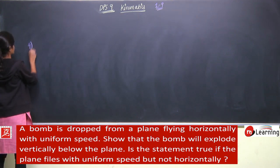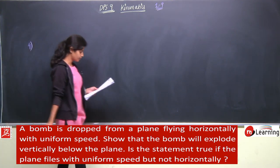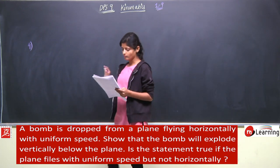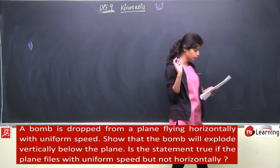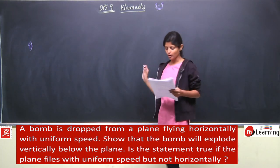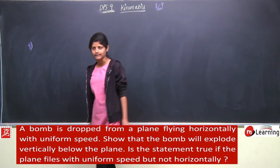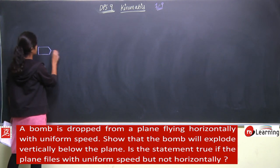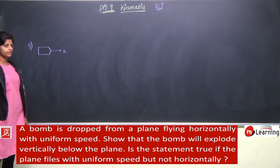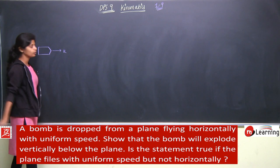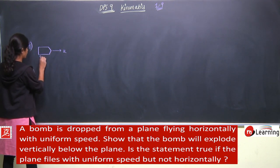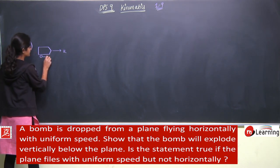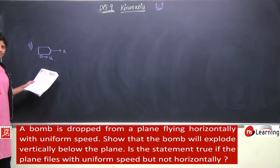Question number 4: A bomb is dropped from a plane flying horizontally with uniform speed. Show that the bomb will explode vertically below the plane. First case — when it is flying horizontally. This is a plane moving horizontally with some speed u. When it drops the bomb, at that instant the bomb also has initial velocity u in the forward direction due to inertia.